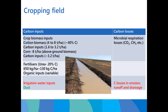Another source of carbon inputs in irrigated systems is irrigation water and dust storms — the water can carry significant sediments. Carbon contribution by irrigation water was not previously quantified. In terms of losses, the bulk of added biomass is believed to be lost via microbial decomposition, but the unknown factor in irrigated systems is carbon losses associated with irrigation runoff, erosion, and drainage.